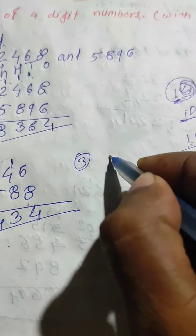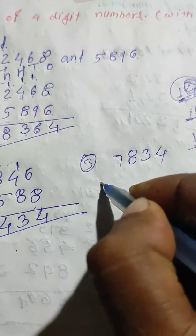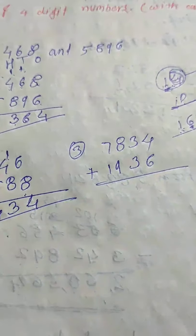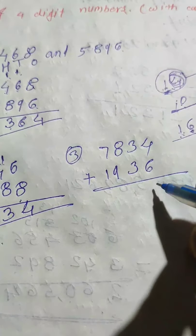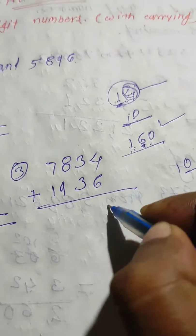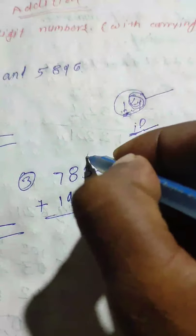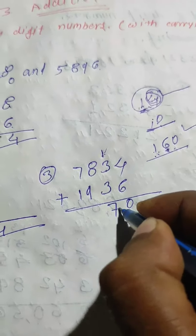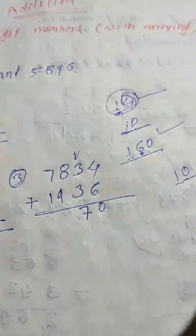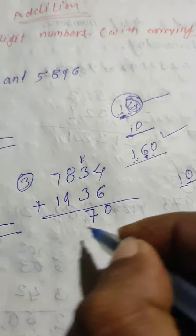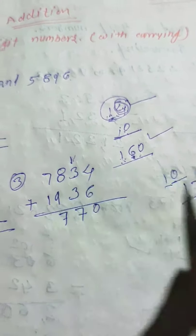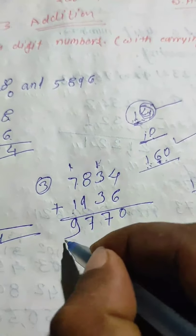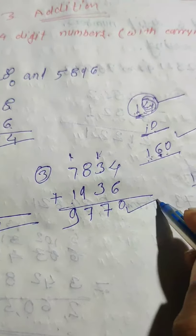Let's see the third example: seven thousand eight hundred thirty four plus one thousand nine hundred thirty six. Again add ones: four plus six is ten. Write zero in the ones place and carry one to the tens place. Three plus three is six, plus one is seven. Eight plus nine is seventeen - write seven in hundreds place and carry one to thousands place. Seven plus one is eight, and eight plus nine is... answer is nine thousand seven hundred seventy.